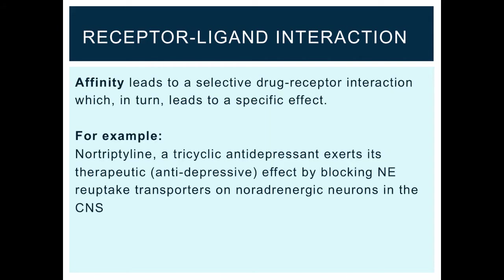So let's synthesize this information we've learned so far. Affinity leads to a selective drug receptor interaction, which in turn leads to a specific effect. An example that we can look at here is nortriptyline, which is a tricyclic antidepressant. It exerts its activity, its antidepressive actions, by blocking norepinephrine reuptake transporters on noradrenergic neurons in the central nervous system. This is a specific effect where the drug is interacting with high affinity with its target.